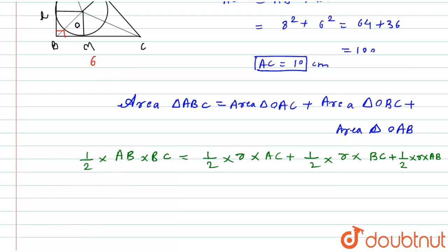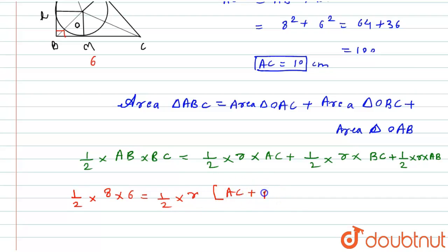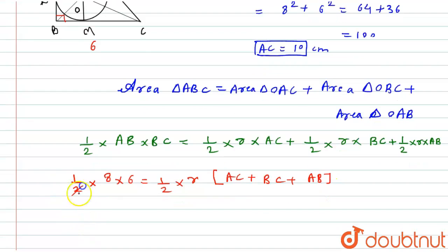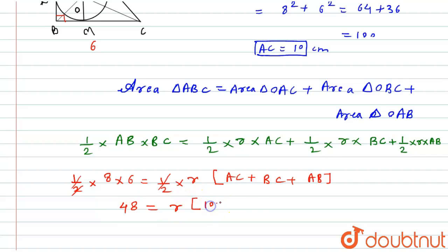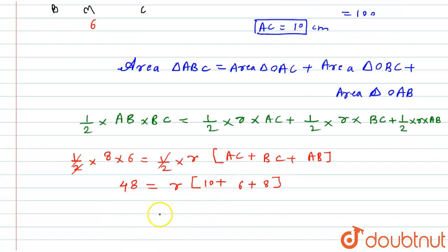Substituting the known values: ½ × 8 × 6 on the left side. On the right side, I take ½ and r as common factors, leaving AC + BC + AB inside the bracket. So we get ½ × 8 × 6 = ½ × r × (AC + BC + AB). The ½ cancels, giving 48 = r × (10 + 6 + 8).